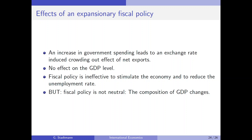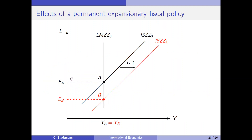The increase in government spending has an effect on international trade and on the current account balance — there will be a deterioration of the current account balance. Exports are down, imports are up, and the current account balance deteriorates. We have real effects: the composition of GDP changes. Let's also try to confirm the graphical analysis by computing multipliers.